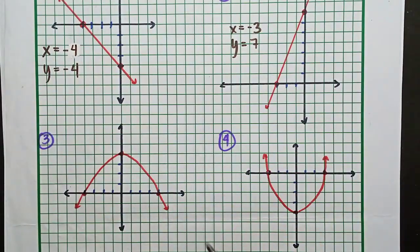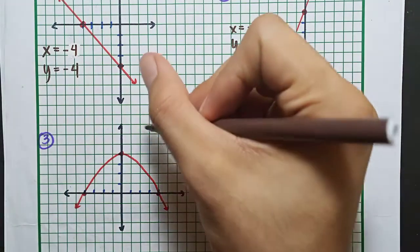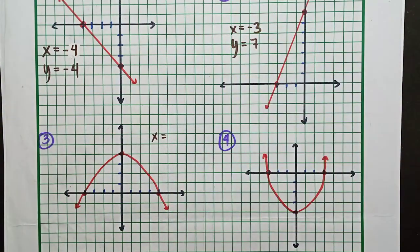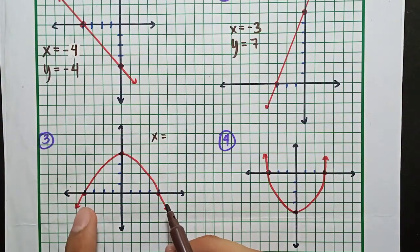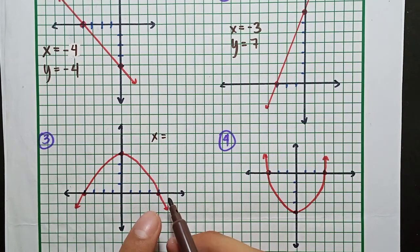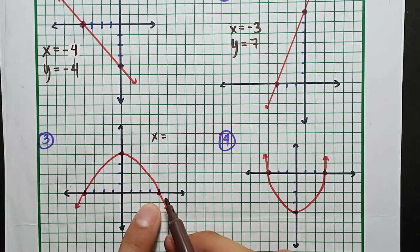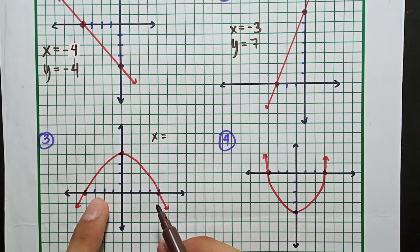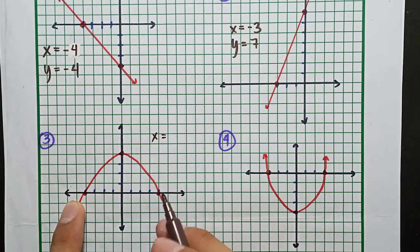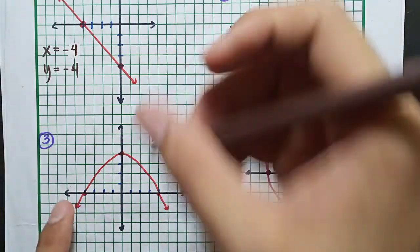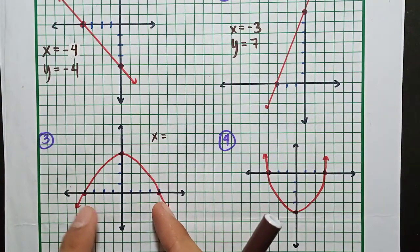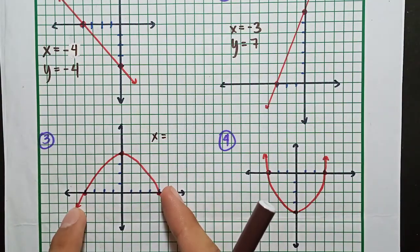Next, number 3. Where does the point hit the x-axis? It hits at 1, 2, 3, 4, and at negative 1, negative 2, negative 3, negative 4. So we have two x-intercepts here because the line hits the x-axis twice.